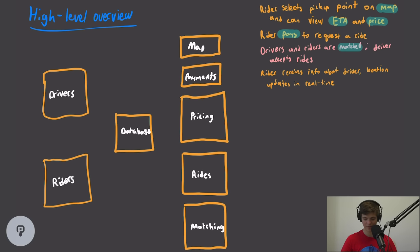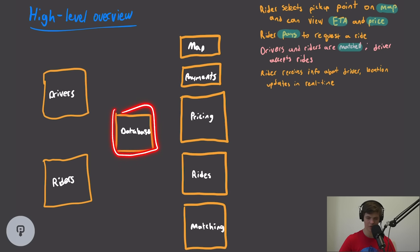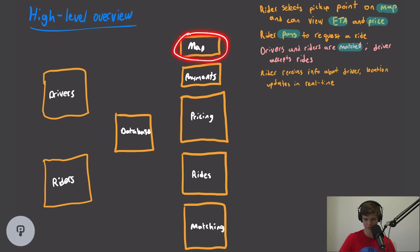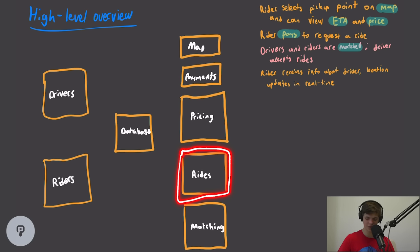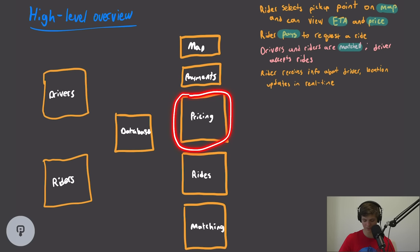Taking a look at how we're going to structure a system like this, we need the drivers and the riders, and we need a database to store all the information about them and the trips they're making. We're going to need a map to serve maps to the user, a ride service that can calculate the ETA and has information about the locations of every driver, a pricing service to calculate pricing based on load, a payment service, and a matching service.